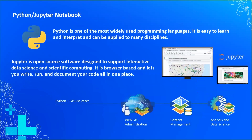ArcGIS has been built on top of popular open-source technologies like Python and Jupyter notebooks. Python is one of the most popular scripting languages for automation across many disciplines. Jupyter notebook is an open-source, browser-based interactive environment designed to support scientific and data science computations. The strength of ArcGIS notebooks lies in the fact that it embraces these open-source technologies by design. ArcGIS notebooks can assist in many use cases like web GIS content administration, data science workflows, and GIS content management.